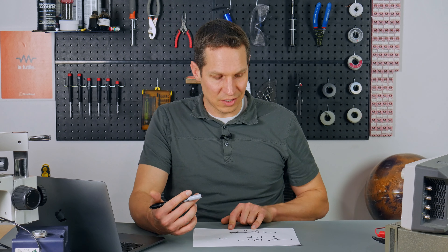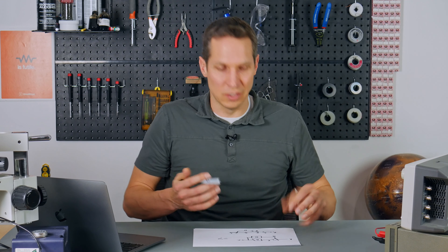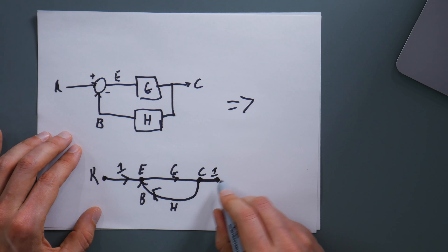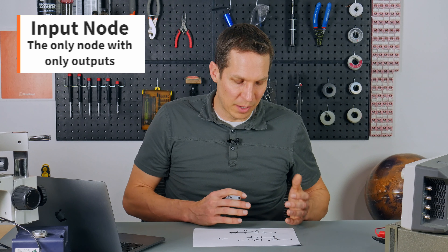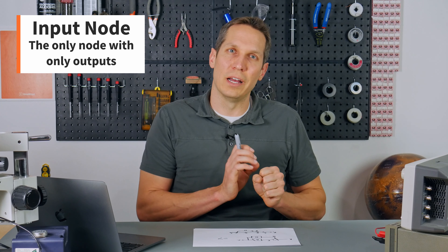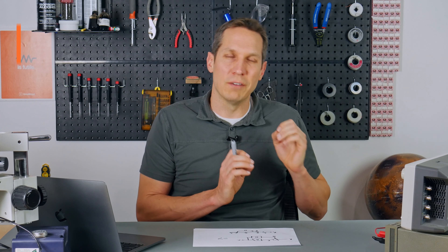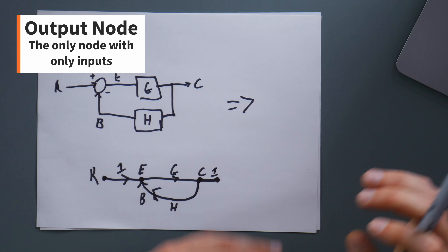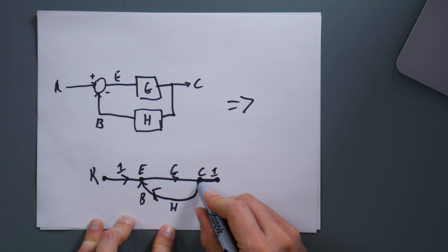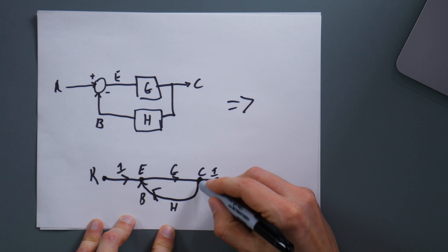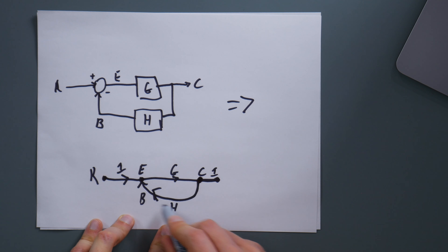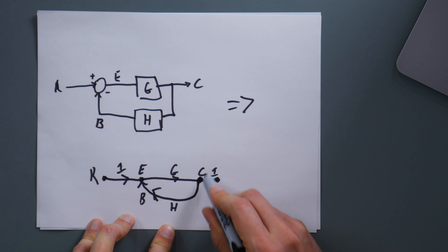This brings us to the key terms: nodes, branches, and gains. Nodes are every spot where something goes in and comes out. Branches are a portion of the system — this portion, or this portion, or this portion right here. The gains, such as G and H, are written alongside the branch. Every branch should have a gain — for example, the output C going out has a gain of one, because nothing is actually happening to it.